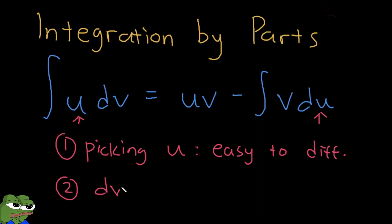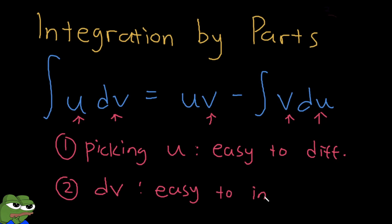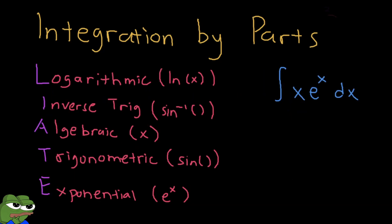When you pick your dv, your dv becomes v — you get rid of the derivative and have to do anti-differentiation, so dv should be easy to integrate. That really is all it is. We use integration by parts whenever we're dealing with a product of two different functions, so it's kind of like the product rule for integration.